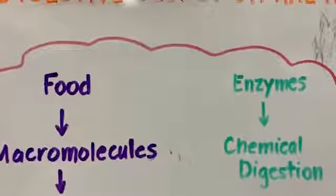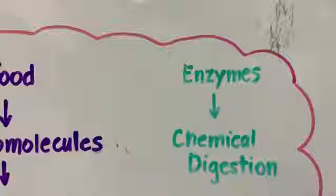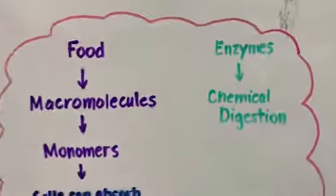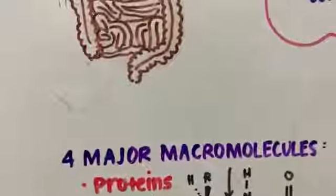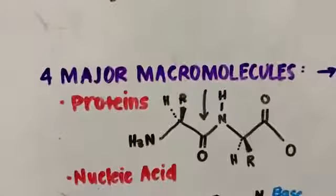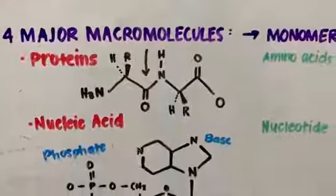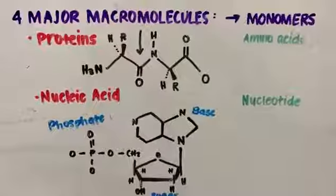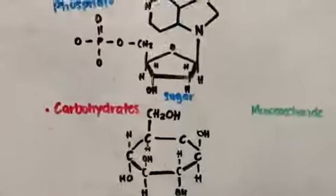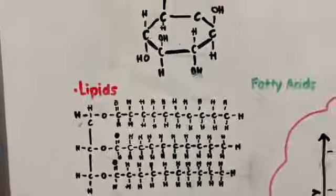Some accessory organs and some alimentary canal organs secrete digestive juice which contains enzymes that aid in chemical digestion. There are four major macromolecules. The first is protein and its monomer is amino acid. The next type is nucleic acid and its monomer is nucleotide. The next is carbohydrates and its monomer is monosaccharide. The final one is lipid whose monomers are fatty acids and glycerol.